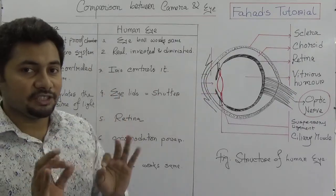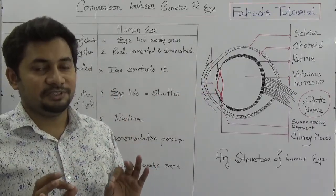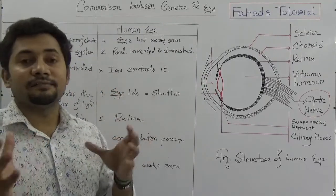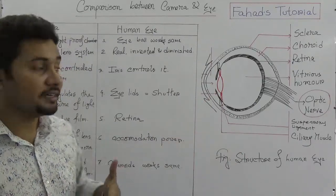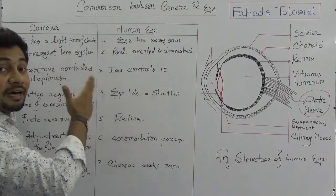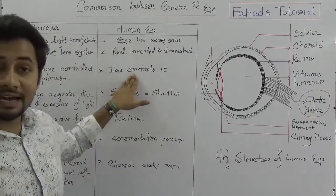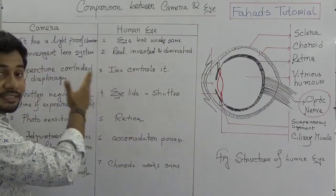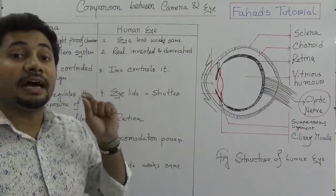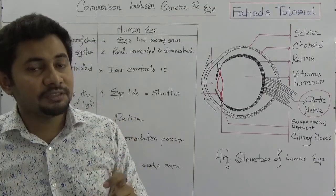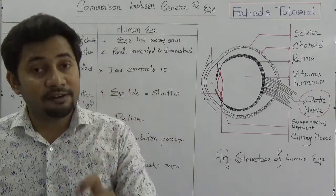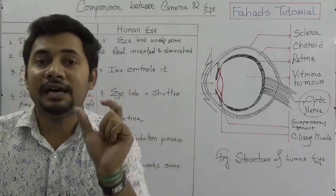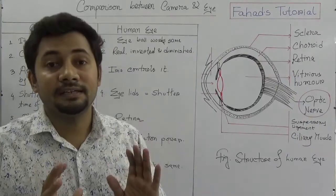Number three is aperture. In a camera, aperture is controlled by the diaphragm. But in our eyes, the iris controls the aperture — that means it controls the amount of light entering. This is the functional similarity between eyes and camera in terms of aperture control. The diaphragm controls aperture in the camera, and the iris works as a diaphragm in our human eyes.